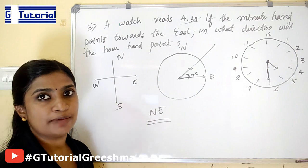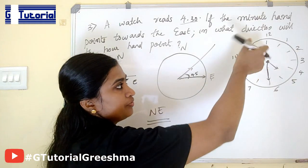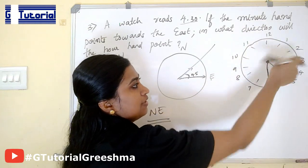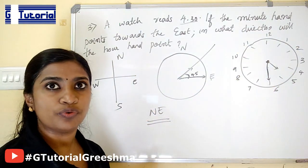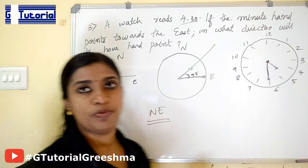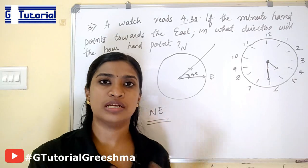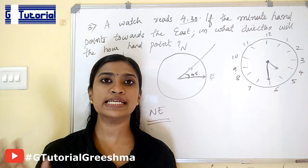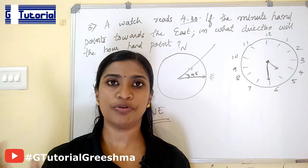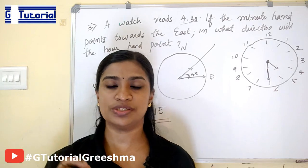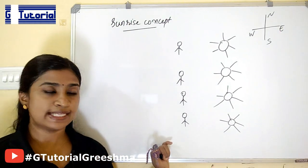This is how we have to do this type of problem. Shift the figure so the minute hand faces east, and the hour hand will face north-east accordingly. Now we can go for the next concept: if a man is facing towards another man at sunrise or sunset — this is the sunrise/sunset concept. We know that the sun rises in the east.